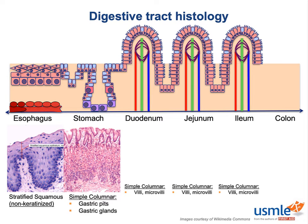The jejunum takes this folding process one step further, and has circular infoldings of both mucosa and submucosa called plicae circularis. On the other end of the scale are the crypts of Lieberkühn, which serve as home to the stem cells that constantly regenerate new columnar cells that keep getting sloughed off. By some estimates, the lifespan of an epithelial cell in one of the villi is only about four days, so these crypts do an important job. The crypts also house the Paneth cells, which act as important defensive cells that keep poop bacteria in the GI tract and not in our bloodstream.